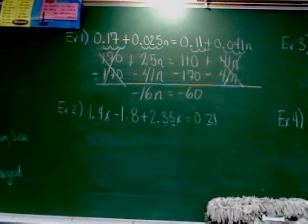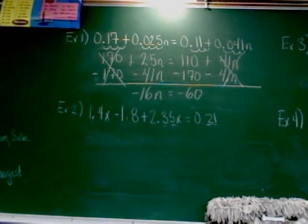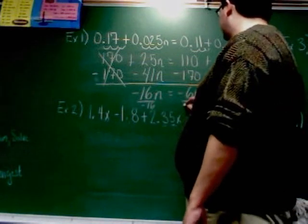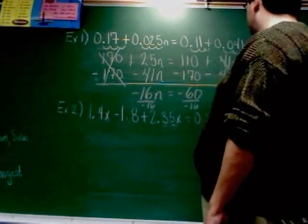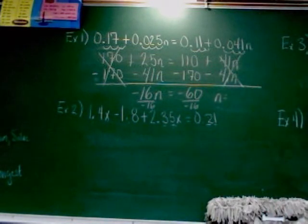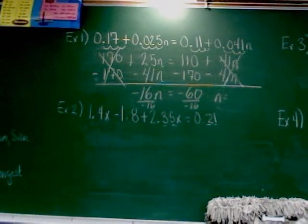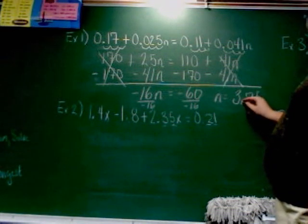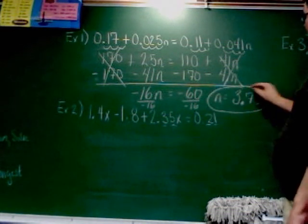It's a multiplication equation, and we know those get solved by dividing. So I divide each side by negative 16, which gives me n equals 3.75.